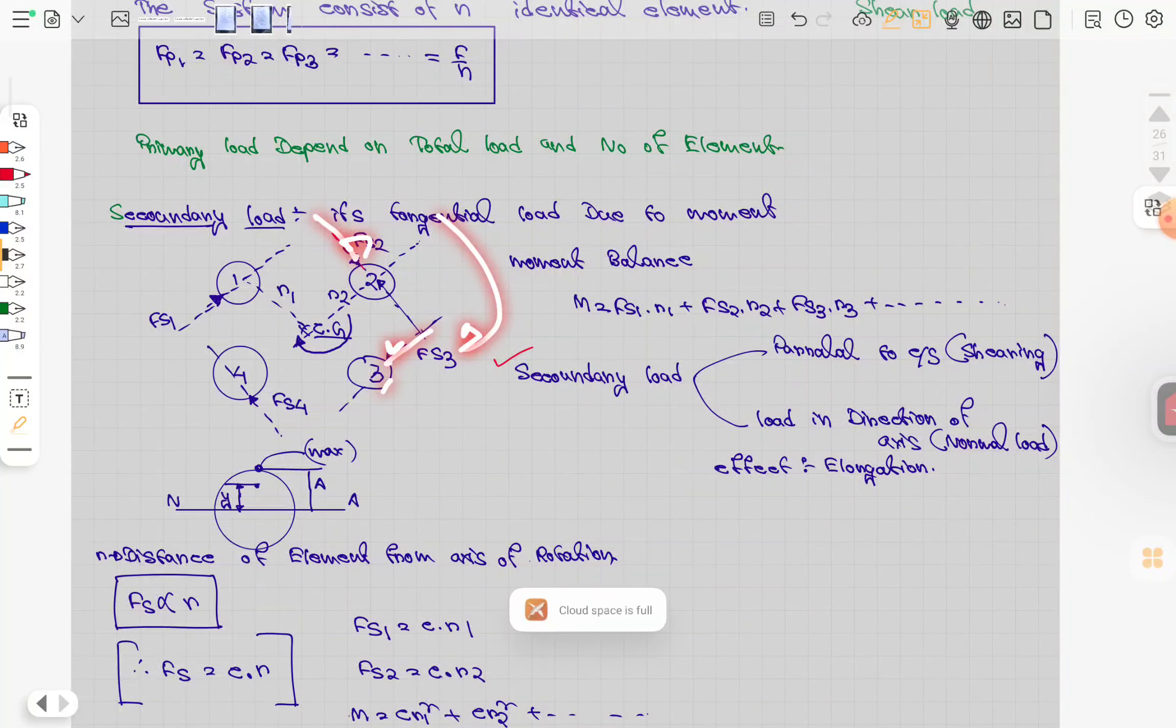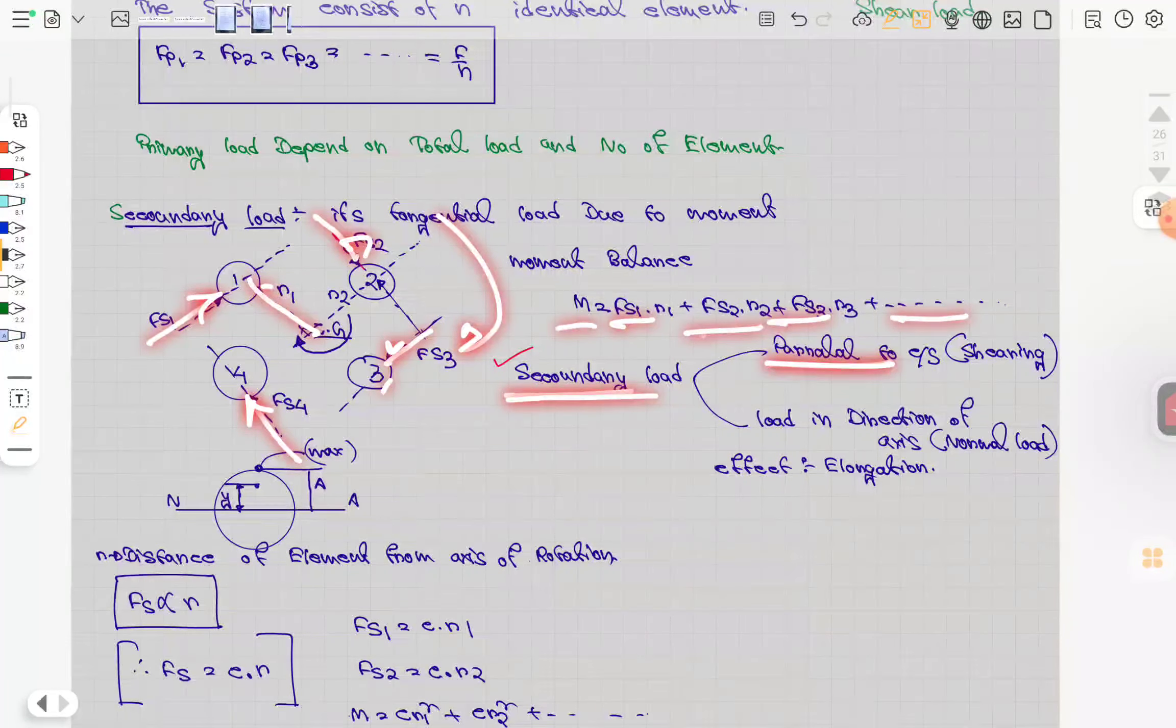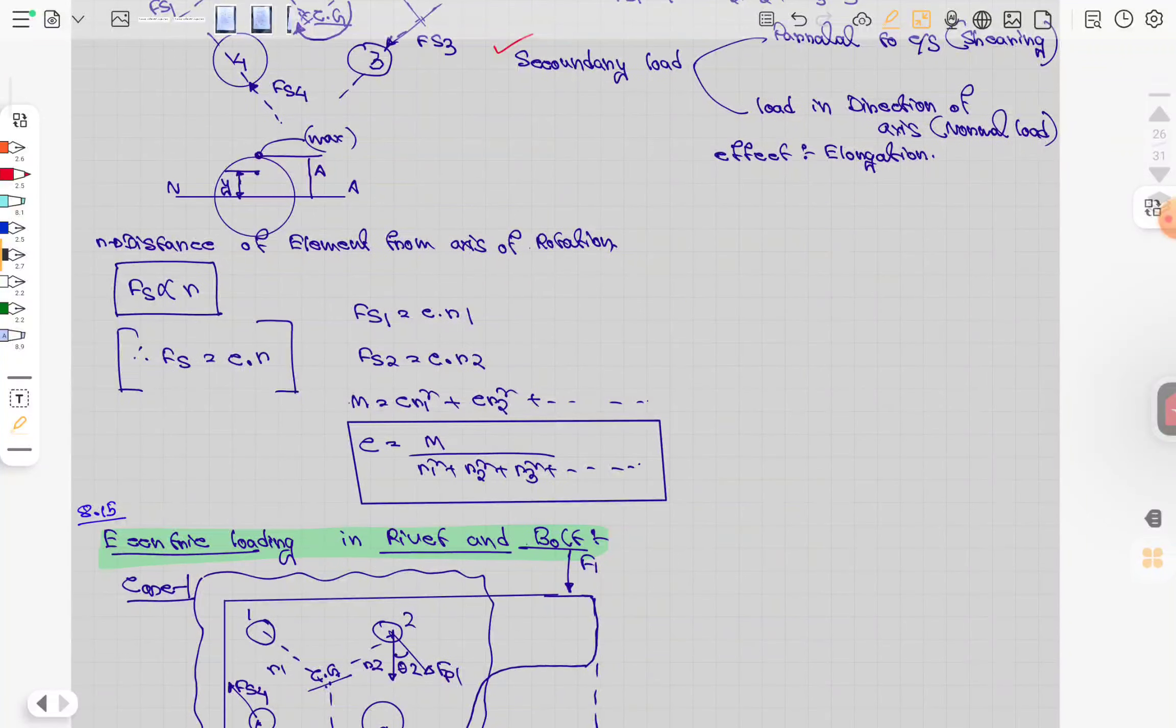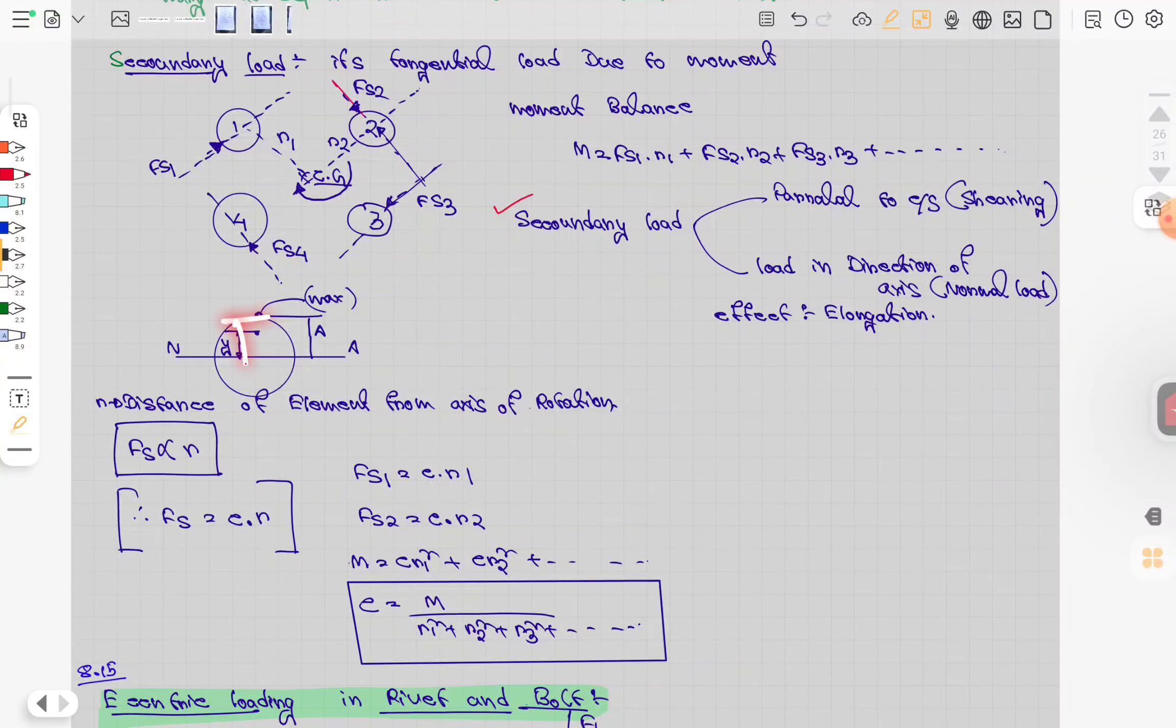The moment is FS1 times r, FS2 times r, FS3 times r - that's how secondary load creates its effect. The distance between them determines the magnitude: greater distance means greater secondary load effect.